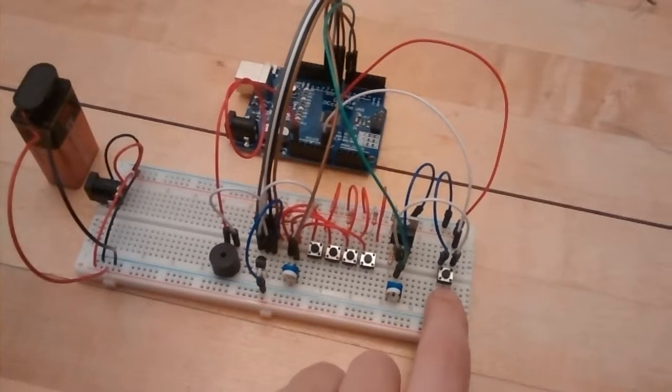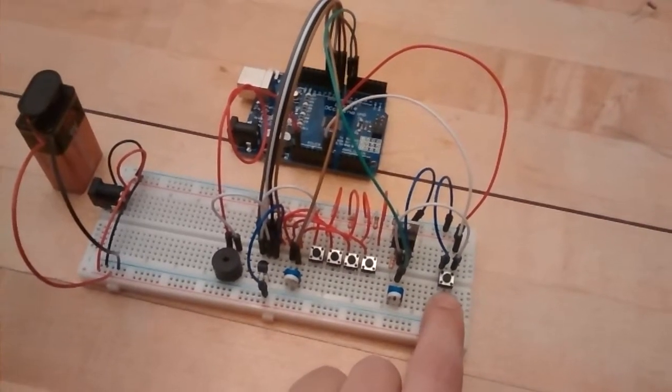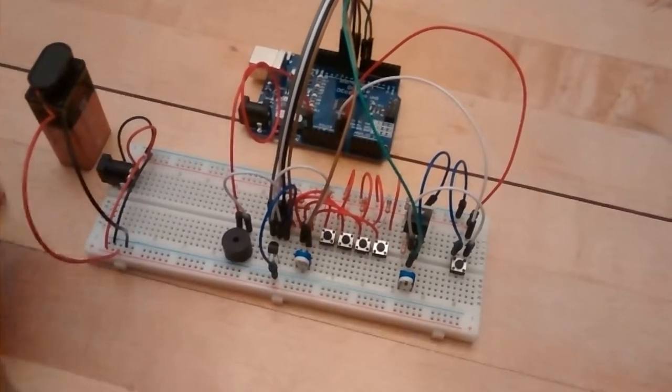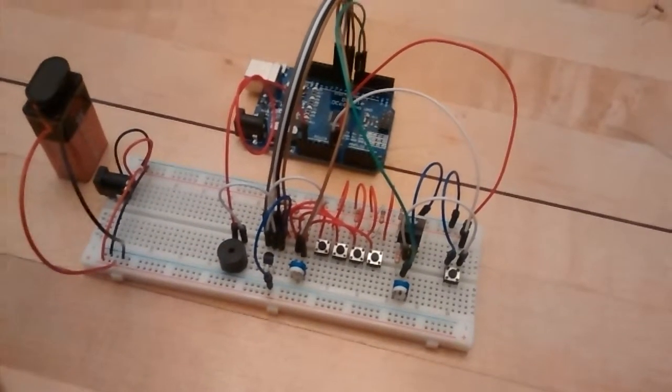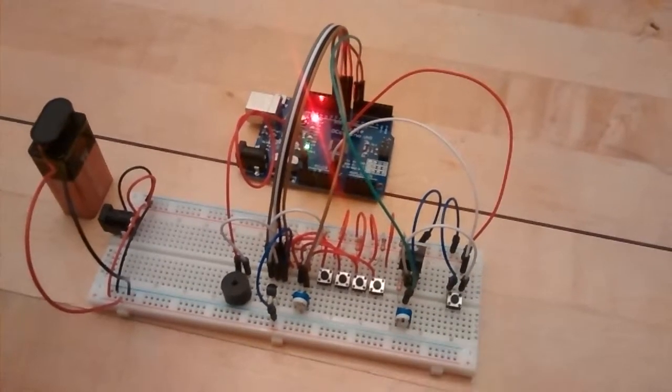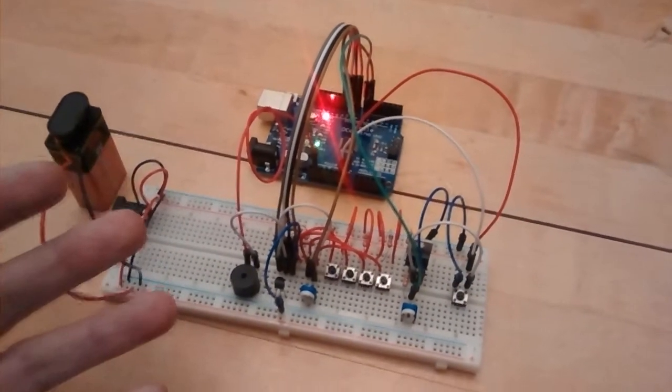And this one right here is the power button. So right now, as you can see, the Arduino is off despite the fact that it's plugged into the battery. So if I press this button right here, the power button, the arm button, now the whole thing is on.